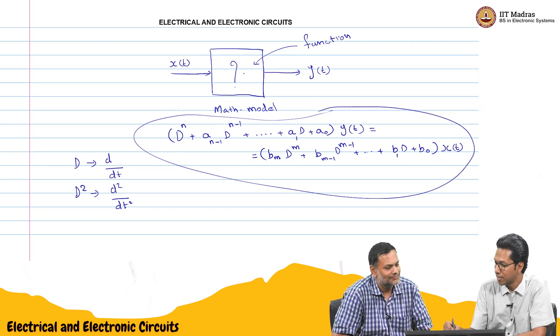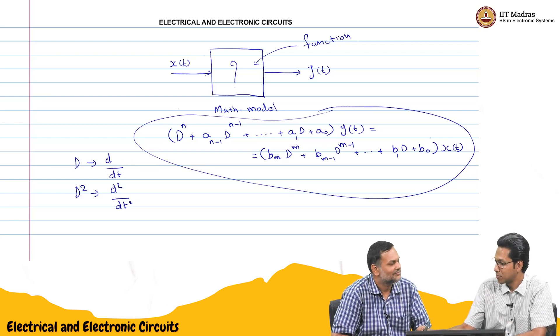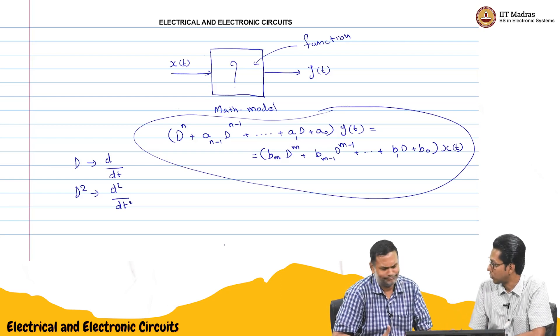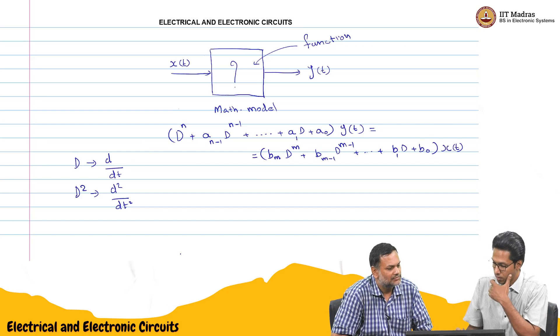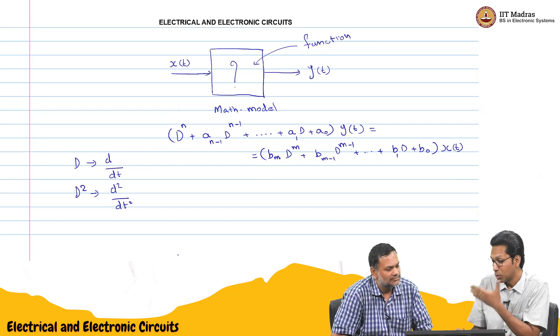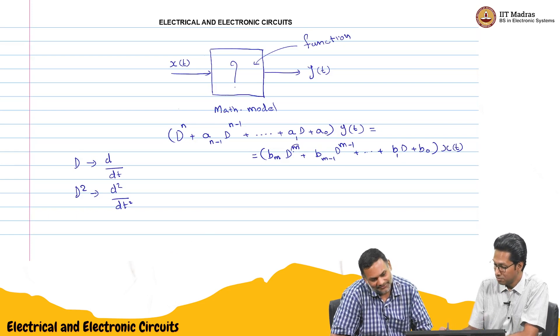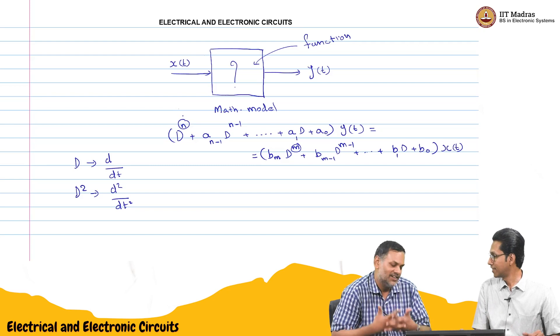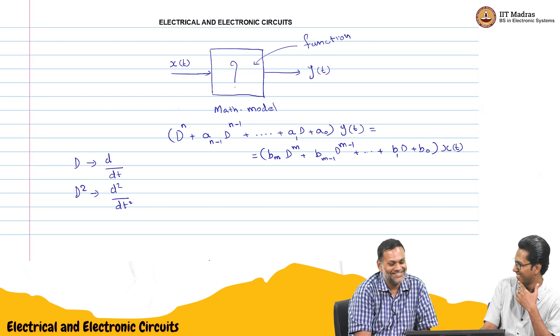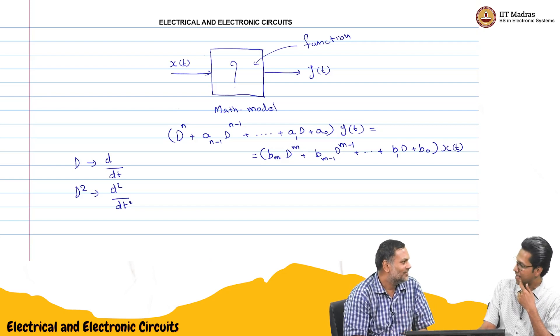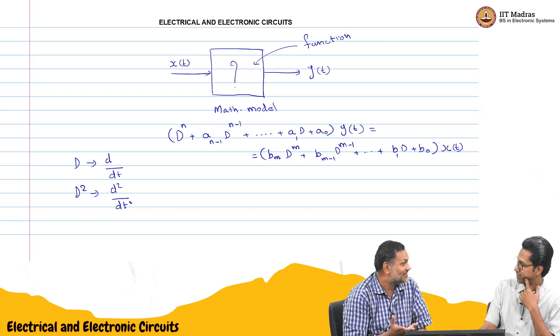I think after this maybe we will take some example then it will become very clear. So let's say another set of terms here, b_m times d power m. So this order is different. The previous one had d power n for y of t. In general this may be different.